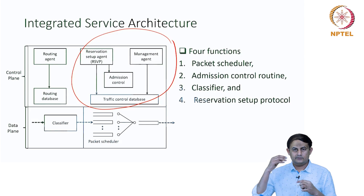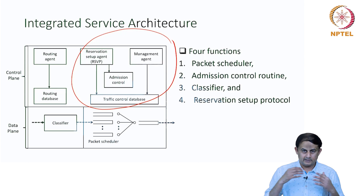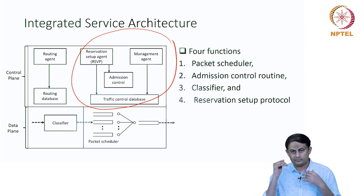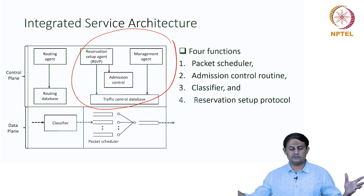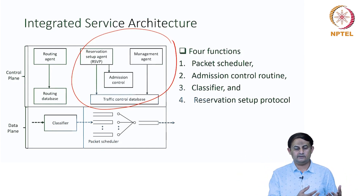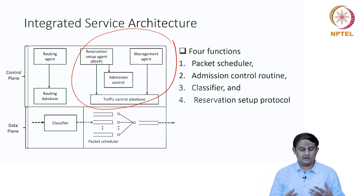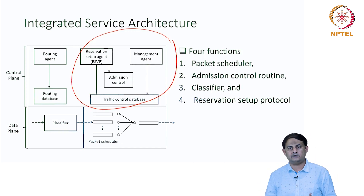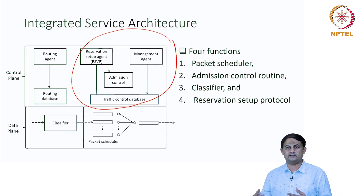The application tells you its requirement and you decide whether to admit or not. If you decide to admit, you reserve the resources between the source and destination endpoints, then load all this information — what is being reserved and what the application requires — into a database called the traffic control database.